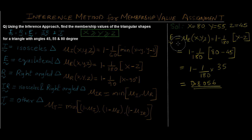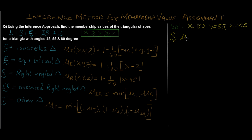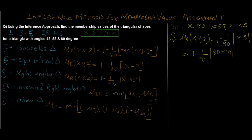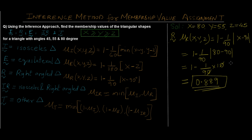For the right angle triangle, μ_R(x, y, z) = 1 − (1/90) × |x − 90|. Remember this is a modulus sign, so any negative value is converted to positive. Substituting x = 80: 1 − (1/90) × |80 − 90| = 1 − (1/90) × |−10|. Since it is inside a modulus, the minus sign is removed, giving 1 − (1/90) × 10 = 0.889. This is the final answer for the right angle triangle.